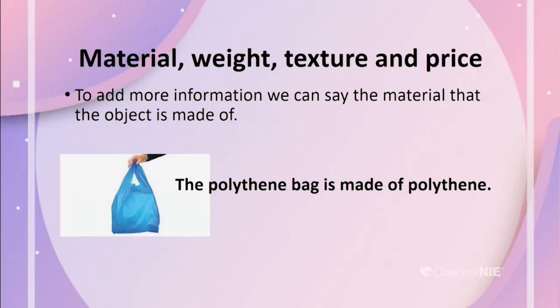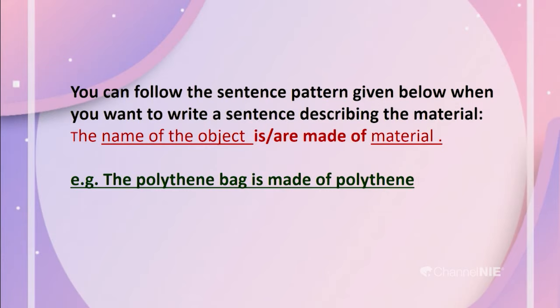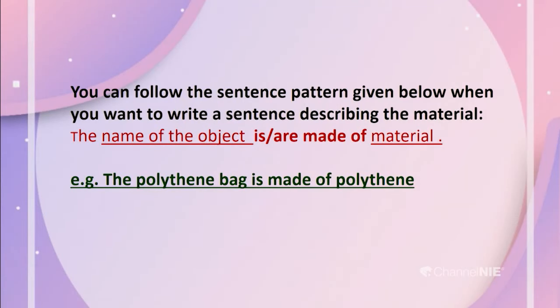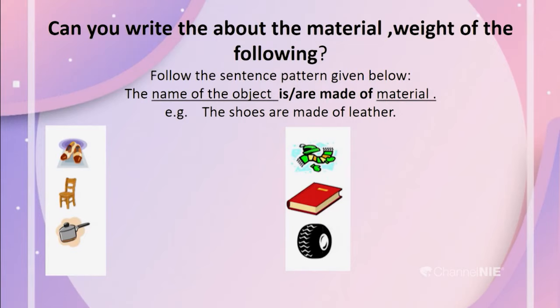Then, we are going to talk about the material, the weight, structure, and price. To add more information, we can say the material the object is made of. For example, the polythene bag is made of polythene. The television is made of metal and plastic. When describing material, follow the sentence pattern: name of the object, helping verb 'is' for singular or 'are' for plural, then 'made of', and the material. The polythene bag is made of polythene.